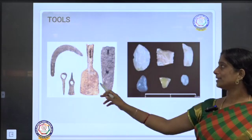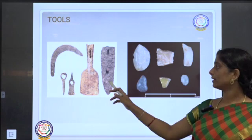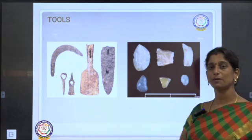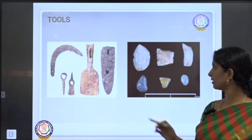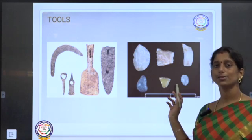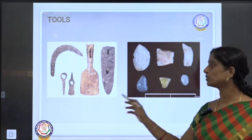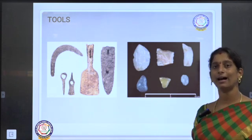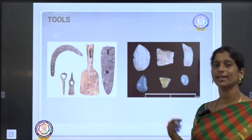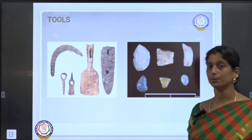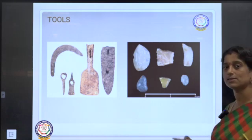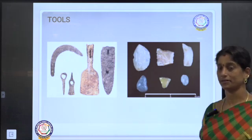These are the tools you can see — tools made with stones which stone age people used. Even these are all made up of stones. They used these tools to cut animals, make fire, and to safeguard themselves from any opponents.